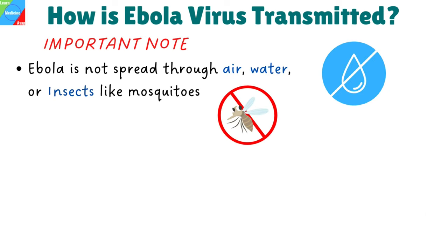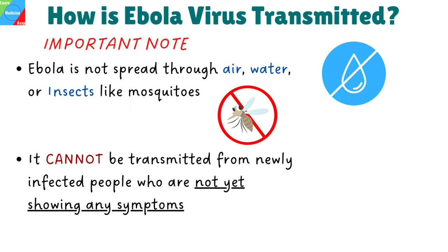Ebola is not spread through air, water, or insects like mosquitoes. It also cannot be transmitted from newly infected people who are not yet showing any symptoms.